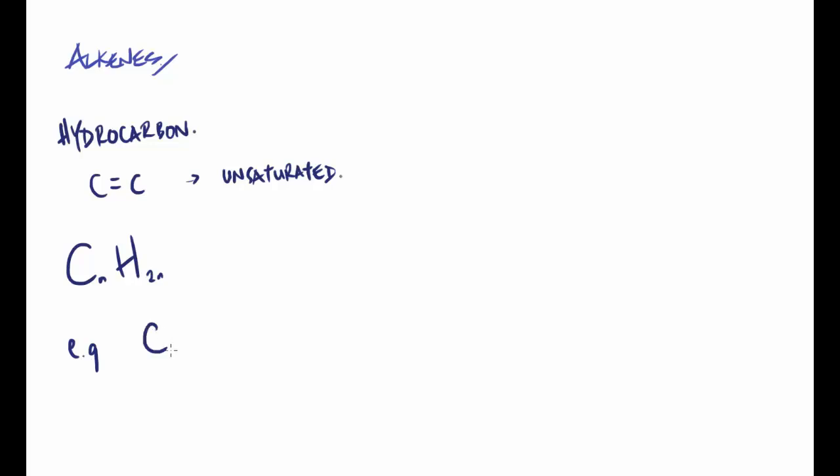For example, the classic one would be ethene. You can't have methene because it only has one carbon so can't have the double bond. C2H4 is ethene, propene is C3H6. That's generally a little bit about alkenes and the way they work.